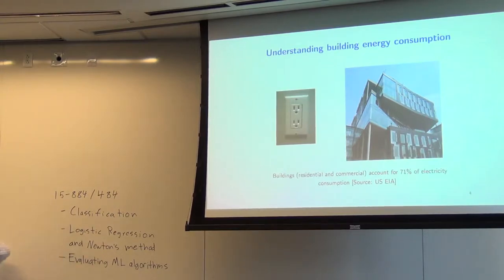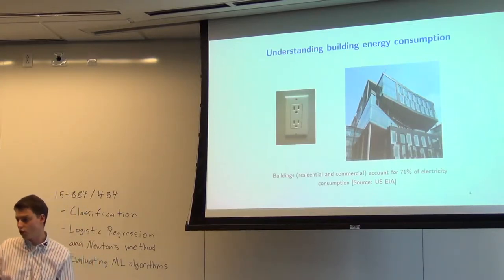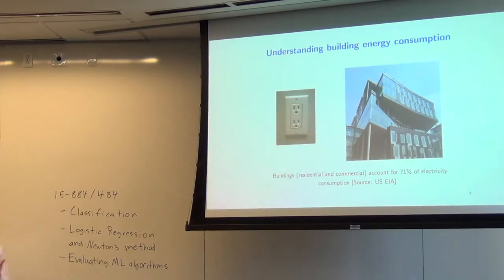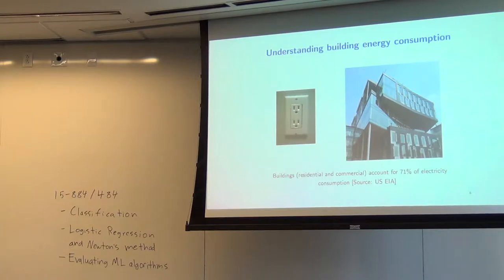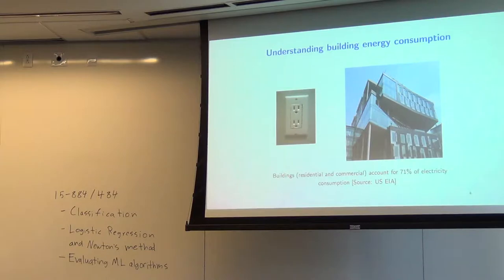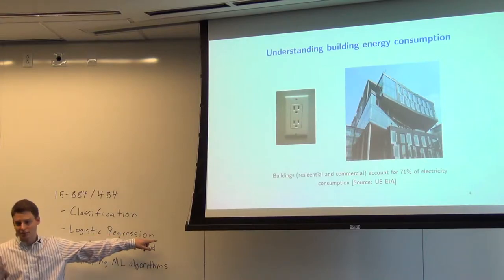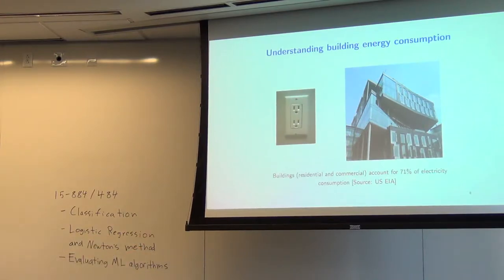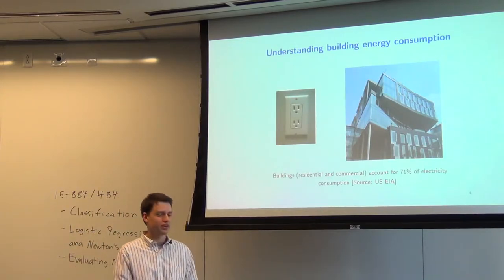We're going to talk first generally about classification and give an example in building systems about a classification task, which we'll use on the homework. Much like the running example for regression was predicting peak demand, our running example for classification is going to be identifying loads in a building — another topic of importance to the smart grid. After that, we'll talk about one very common type of classification algorithm called logistic regression. It's called regression, but logistic regression is a classification algorithm predicting 0 or 1 items.